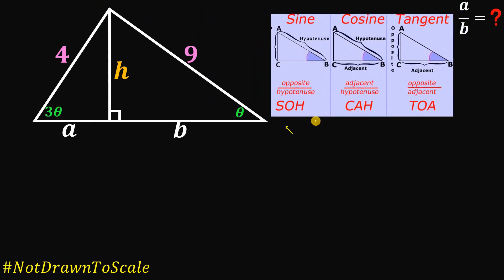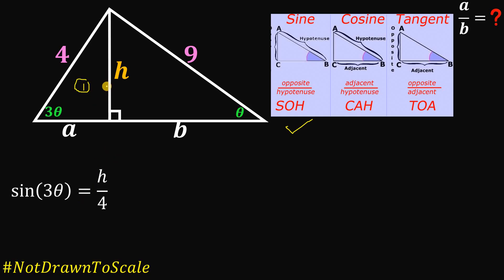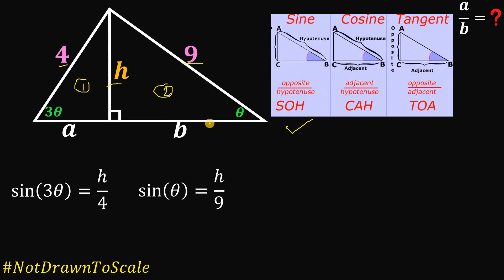First, let's use the sine function — opposite over hypotenuse. Using the first right triangle, sine of 3 theta equals H over 4. On the second right triangle, sine theta equals H over 9.